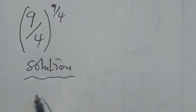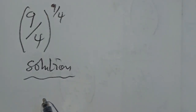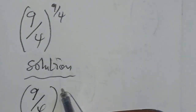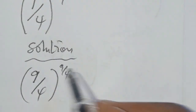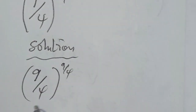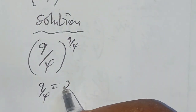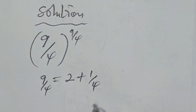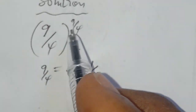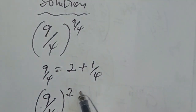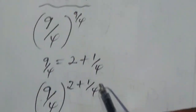What we need to do is to split the exponents — that means using the splitting exponent approach. Our question is 9 over 4 to the power of 9 over 4. This exponential fraction can be simplified since 9 over 4 is equal to 2 plus 1 over 4. So we replace the exponent, giving us (9/4) to the power of (2 plus 1 over 4).